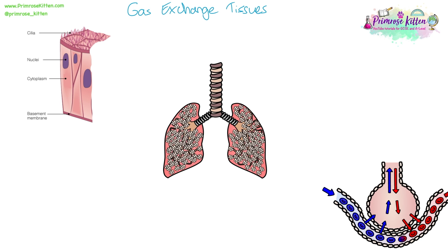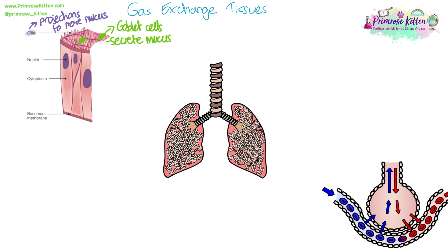One of the main tissues that lines the airways of the gas exchange system is ciliated epithelium. It contains two types of cells: ciliated epithelial cells which have cilia to remove mucus, and goblet cells which secrete the mucus. This mucus traps dust, dirt and pathogens, and the cilia sweep that mucus away so that it can be removed from the body.